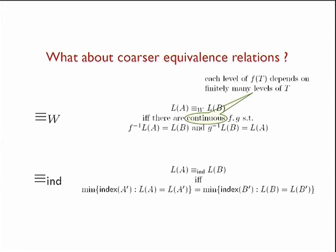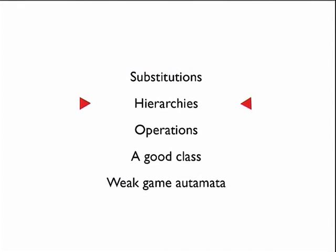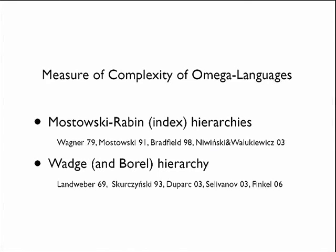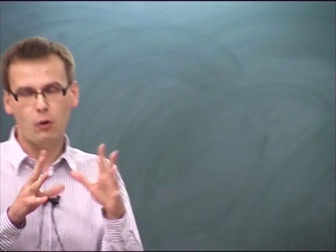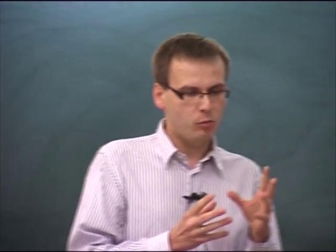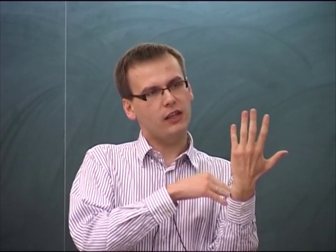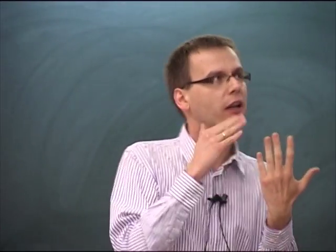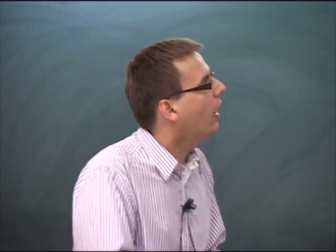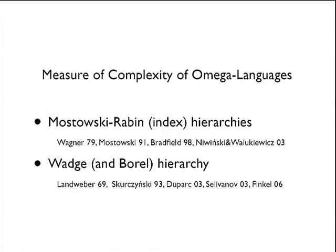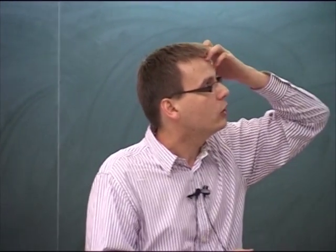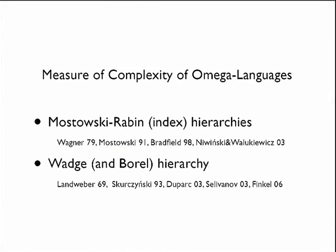These constitute two measures of complexity of omega-regular languages. You can sort languages using those relations: a language is more complex topologically if it can be reduced to the other via a continuous function, and for the index equivalence relation, the higher the index the more you can recognize. These are two widely studied complexity measures for languages of infinite objects — not just trees but also words.